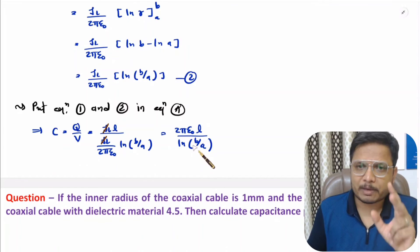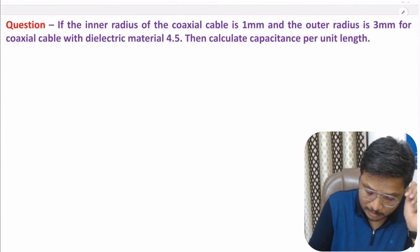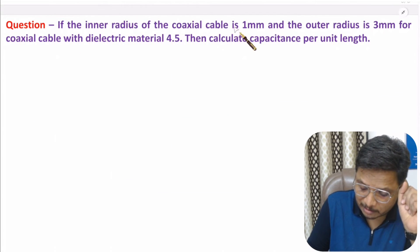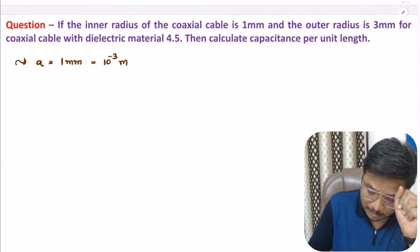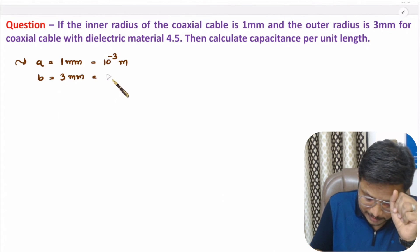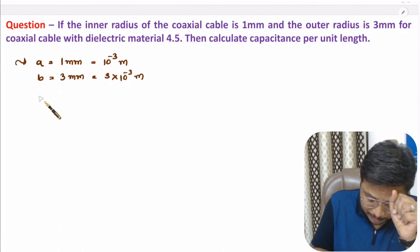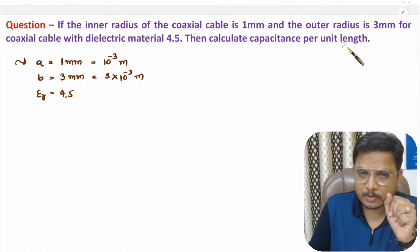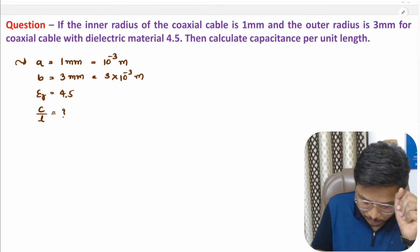Now I'll explain one simple problem based on calculation of capacitance due to coaxial cable. In the question, the inner radius of coaxial cable is 1 mm, so small a is 1 mm which equals 10 to the power minus 3 meters. The outer radius is 3 mm, so small b is 3 into 10 to the power minus 3 meters. The dielectric material has dielectric constant 4.5, so epsilon r equals 4.5. We need to calculate capacitance per unit length, i.e., C divided by L.